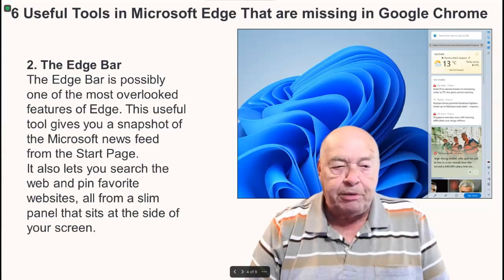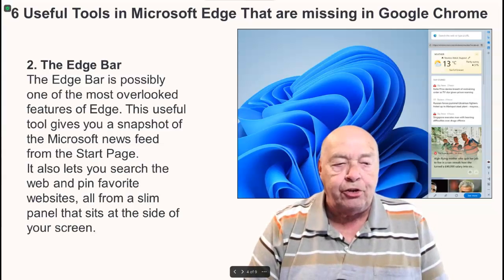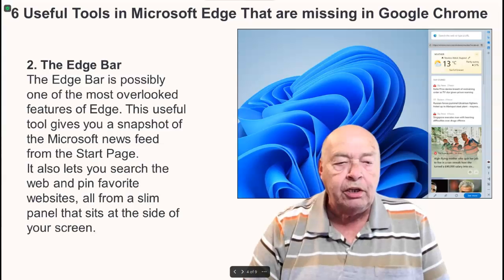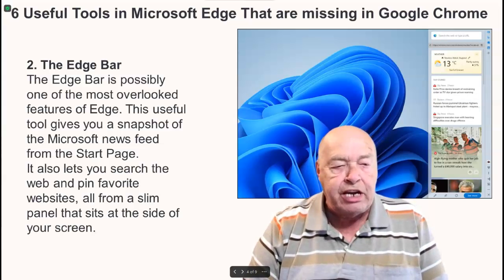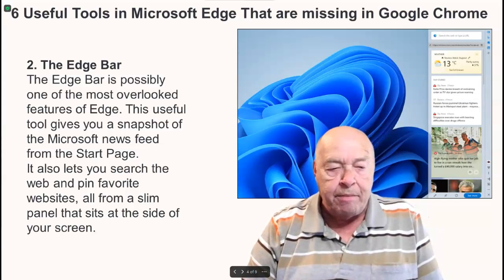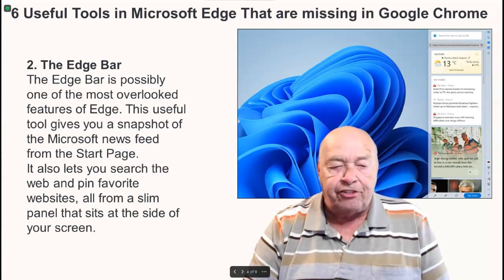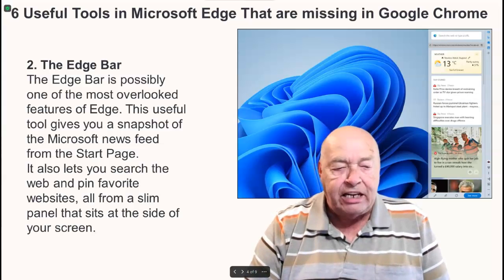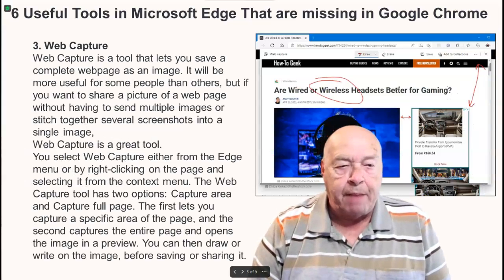Number two: the Edge Bar. The Edge Bar is possibly one of the most overlooked features of Edge. This useful tool gives you a snapshot of the Microsoft news feed from the start page. It also lets you search the web and pin favored websites, all from a slim panel that sits at the side of your screen.